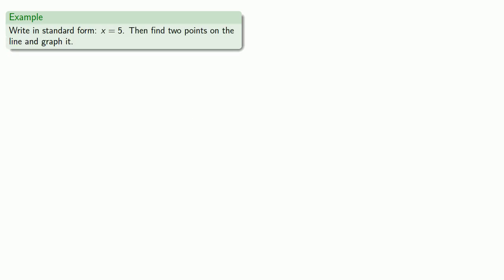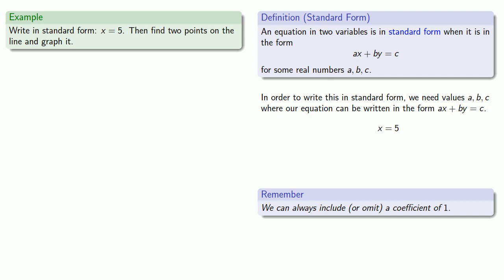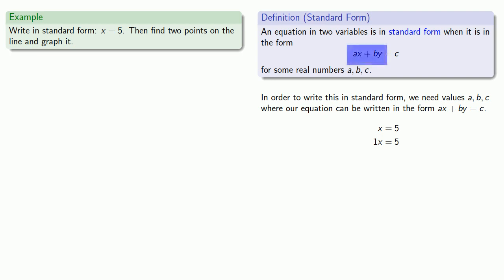Let's fly around with this idea a little bit. Let's start by writing the equation x equals 5 in standard form, then find two points on the line and graph it. In order to write this in standard form, we need values a, b, and c, where our equation can be written in the form ax plus by equals c. Let's remember a couple important rules of algebra. First, we can always include or omit a coefficient of 1. So I need a coefficient of x, so I can put in a 1 and now I have 1x equals 5. Now, standard form also requires us to have a y term, which we don't have. But more generally, standard form requires us to have a sum of two things.